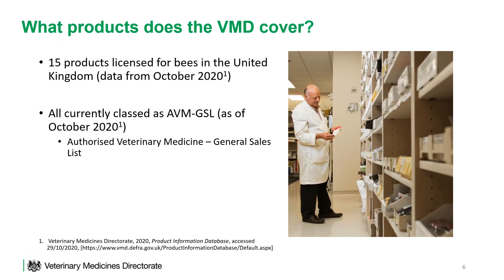What products do the VMD cover? As of recording this presentation in October 2020, there are 15 products licensed for bees in the United Kingdom. All are currently classed as AVM-GSL, which stands for Authorised Veterinary Medicine General Sales List. This means these products can be bought over the counter from suitable retailers and do not need to be purchased from a veterinary surgery, and they do not require a veterinary prescription.